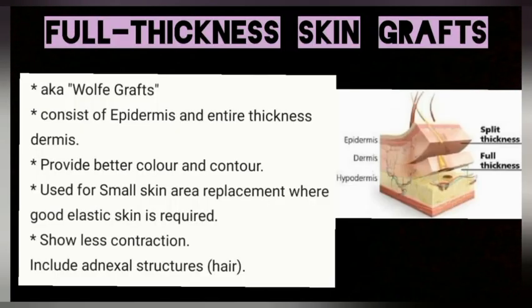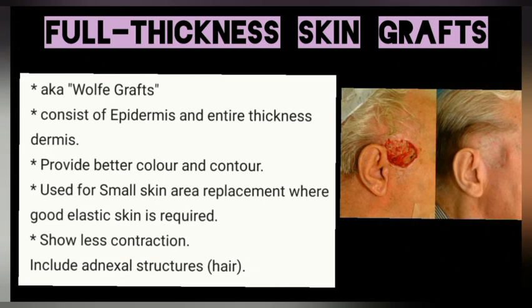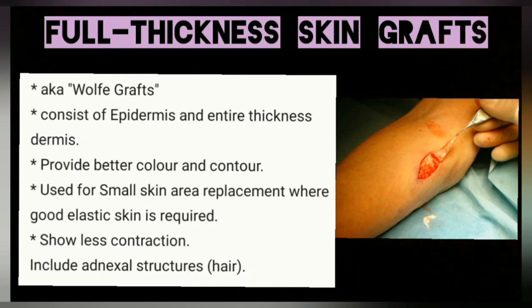Full thickness skin grafts are also known as Wolfe grafts. They consist of epidermis with the entire thickness of dermis and provide better color and contour compared to split thickness skin grafts. Since they are taken in deeper sections, they can close a deep wound at the recipient site, but they also create a wound at the donor site. Therefore, small sizes are preferred to minimize donor site damage.